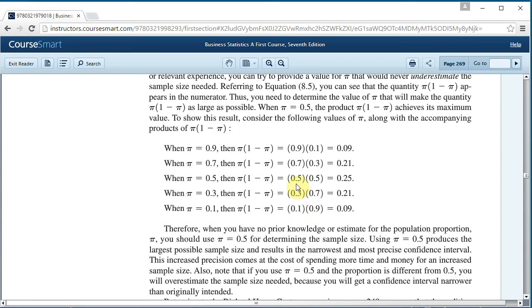we see that this number here, 0.09, is much smaller than 0.25. We see that the biggest that this ever gets is 0.25. And that's when the proportion we're talking about is 50%. So when the proportion is 50%, then we need the largest sample size that we would ever need.